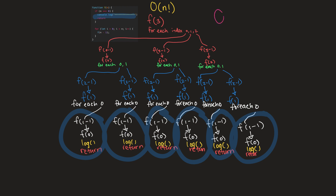Because if you look here, we have O(3!) — O of three factorial — and the reason why is because our n is three, so we're just substituting. And three factorial is six, because to get the factorial of a number you multiply every number up until that number: two times one is two, and two times three is six. And again, we needed to execute this console log code 1, 2, 3, 4, 5, 6 times. If we dig a little deeper, we'll see that three factorial is a result of multiplying every number up until three.